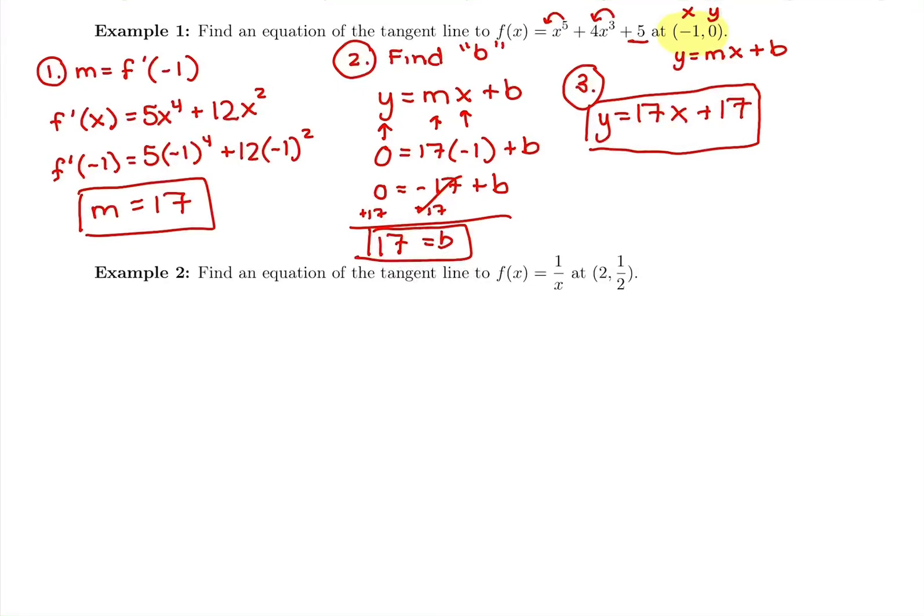Okay, in the last video we did the equation of the tangent line, first example, following our three steps. Take the derivative, plug in that x value to see what the slope of the tangent line is, find b by plugging in your y, m, and your x, and then write the equation. So we're going to have the same three steps, but we're going to do it with a new function.